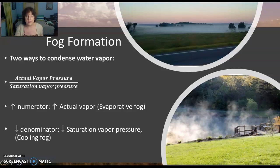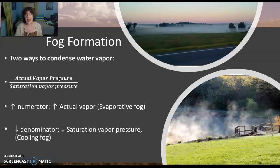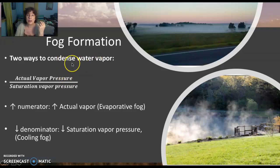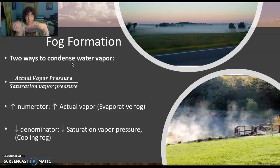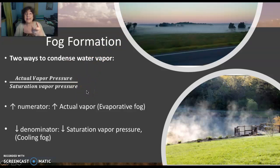In the relative humidity calculation, it's all about humidity in the air. On the numerator we have the actual vapor pressure, and in the denominator we have the saturation vapor pressure. If you want to increase humidity — and fog is basically increased humidity above the surface — you could do it in one of two ways: you could increase the actual vapor pressure, or you could decrease the denominator, the saturation vapor pressure, which would increase the humidity.